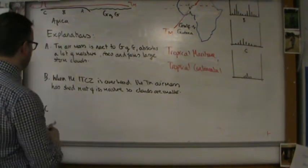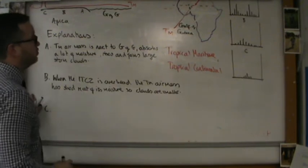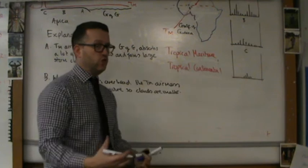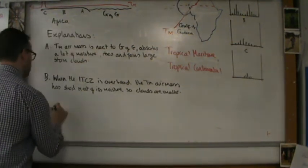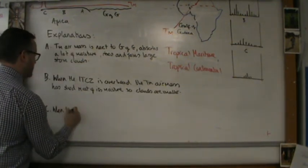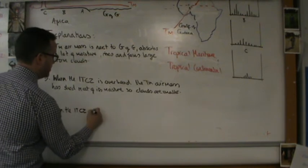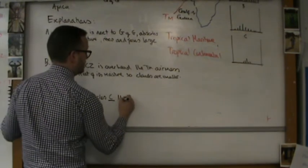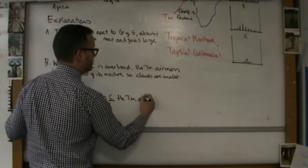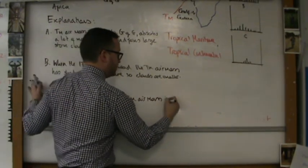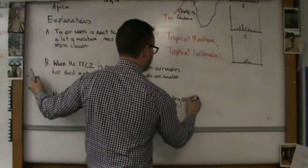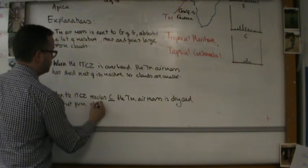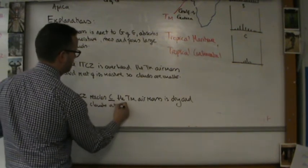And that takes us to location C. And at location C, the TM air mass is so dry it can't form clouds at all. When the ITCZ reaches C, the TM air mass is dry and cannot form clouds at all.